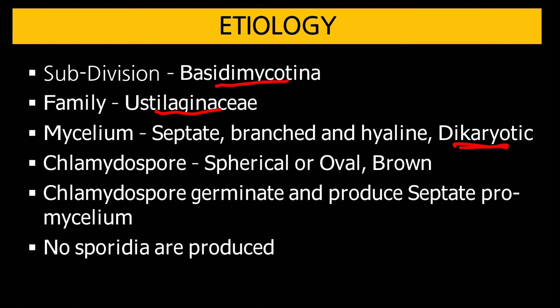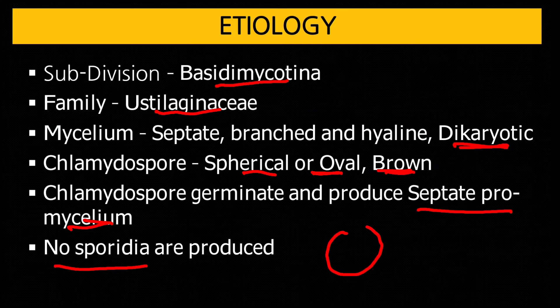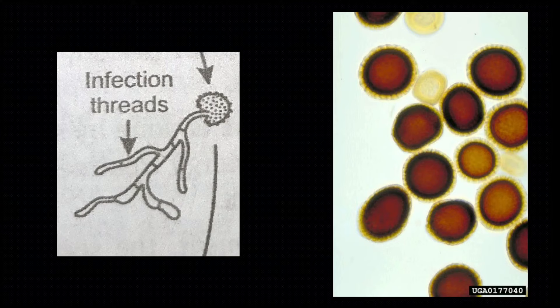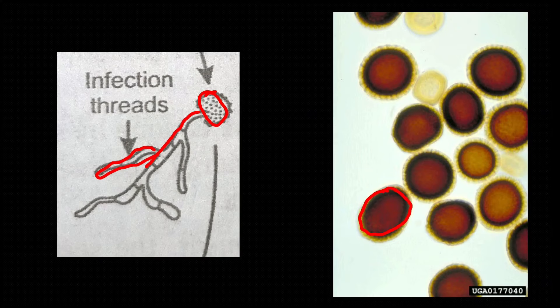Chlamydospore is spherical or oval, brown in color. On germination it forms septate pro-mycelium, but does not produce sporidia or basidiospores — this is key. In rust, teliospore germinates → pro-mycelium → basidiospores; but here that does not happen, so this is called chlamydospore, not teliospore. The structure has small spine-like projections.